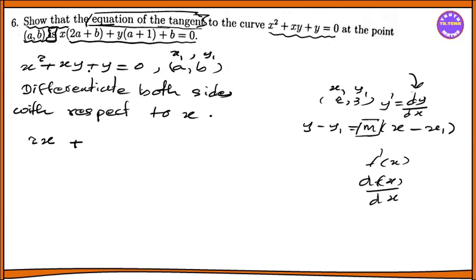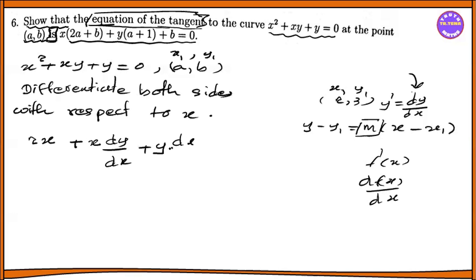Plus the second term, xy. Using the product rule: x times dy by dx plus y times dx by dx, which gives x times dy/dx plus y.